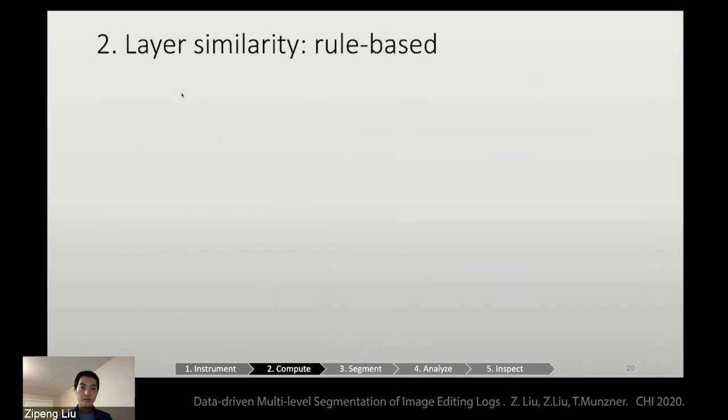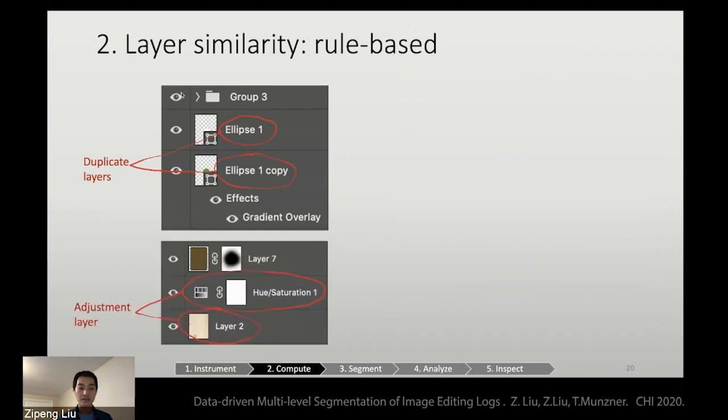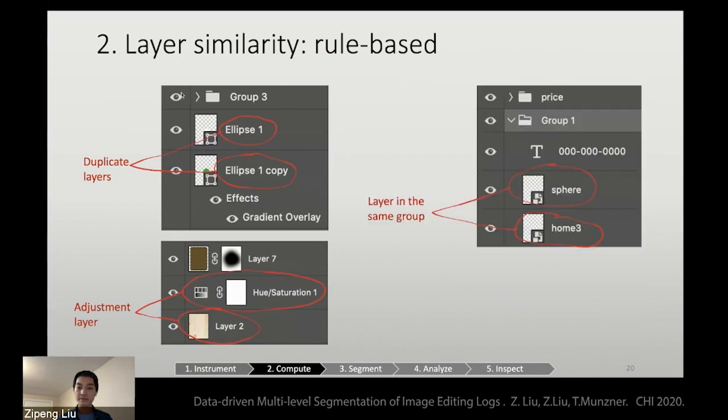The second measure is layer similarity. We are using a rule-based approach. For example, in this one, a layer ellipse 1 copy is the duplicate layer of ellipse 1. And this one shows two layers where one is the adjustment layer of another. And layer sphere, layer home 3, they are layers in the same group. We conjecture that if two layers have stronger relationships, two events will have larger similarity.